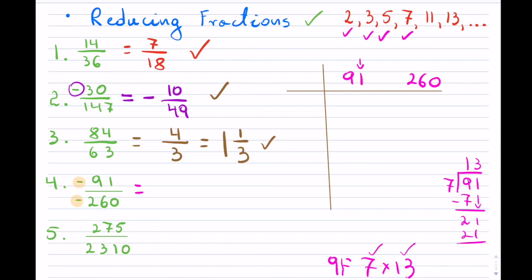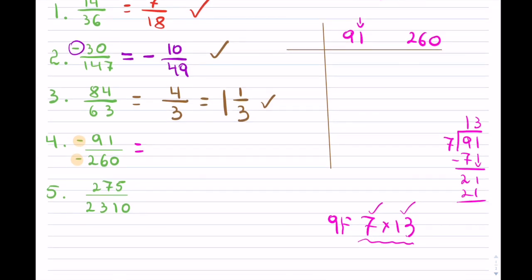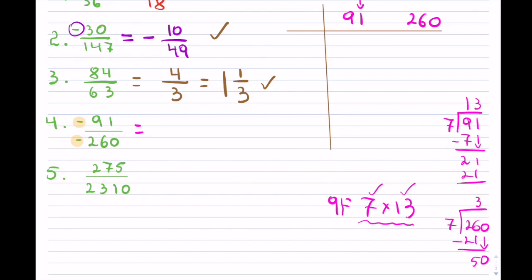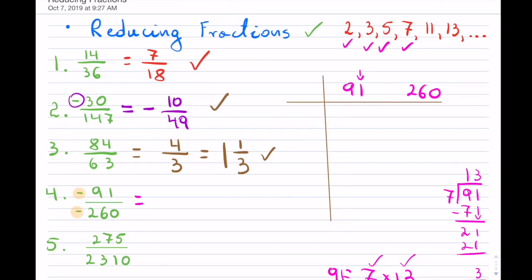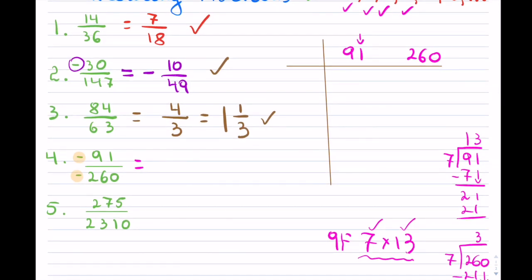7 worked for 91, but I have to check it for 260. Checking 7 into 260: 7 into 26 goes 3 times giving 21, subtract to get 5, bring down 0 to get 50, and 7 does not go into 50. So 7 does not work for 260 — it worked for 91 but not for 260.